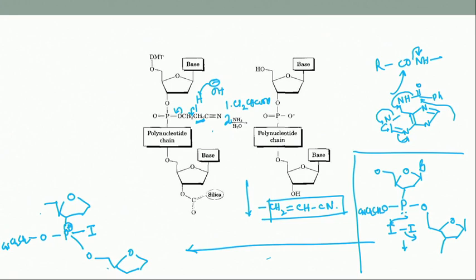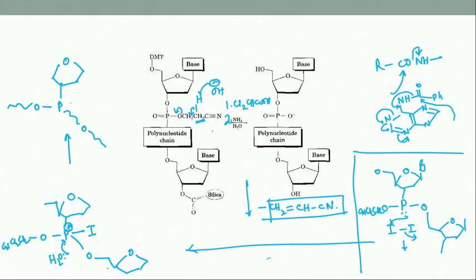Since the reaction uses iodine in THF with water, water then attacks the positively charged phosphorus, giving a species with phosphorus, the cyanoethyl oxygen, the other chain oxygen, iodine, and OH. As water adds, one hydrogen is lost and the other iodine is expelled, giving the phosphate.